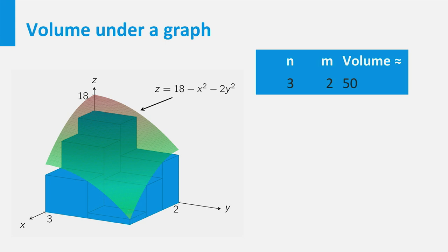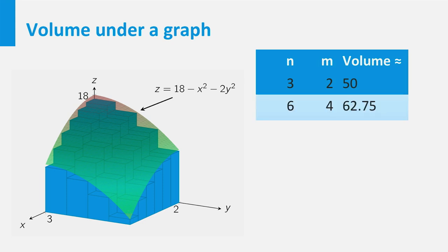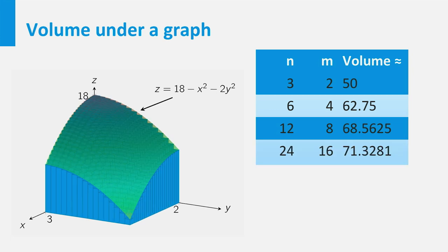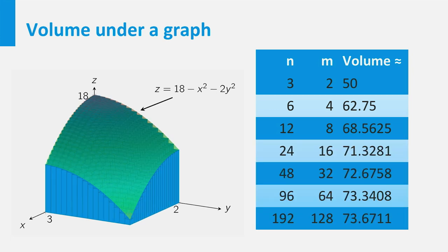Let us illustrate this. If we take n and m twice as large, the number of rectangles increases to 24 and the corresponding Riemann sum becomes 62.75. We can continue to double n and m again and again, and if we keep doing this, we get the values as shown in the table.